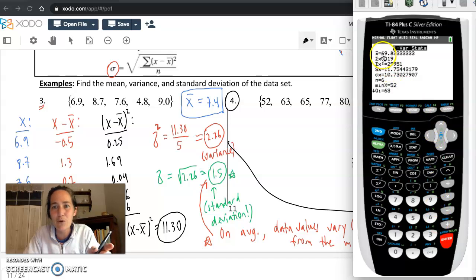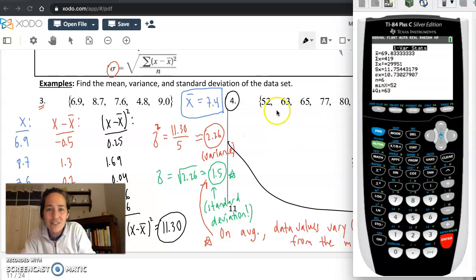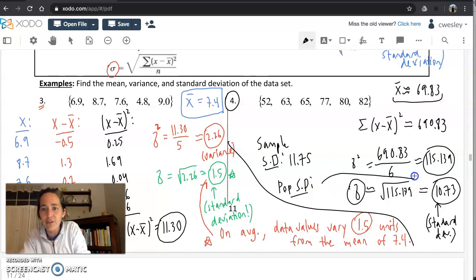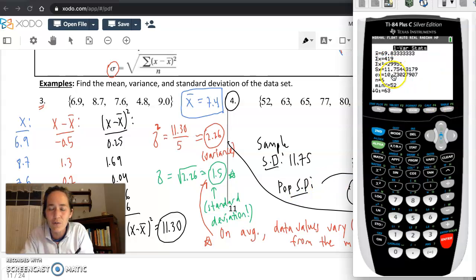What useful things do you see here? What do we recognize? The mean, 69.83. What's sigma again? The sum of all the values, if you want to know that, is 419. The sum of the values squared is 29951. Check it out. Sx and sigma x. So the sample standard deviation is given on the screen, and it's going to be 11.75. The sigma, the population standard deviation, is going to be this value there, the 10.73, and it was on my screen waiting for me the whole time. So you can feel free to get standard deviation from this screen.